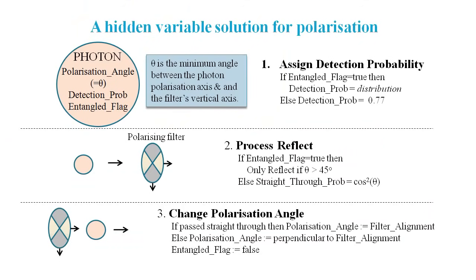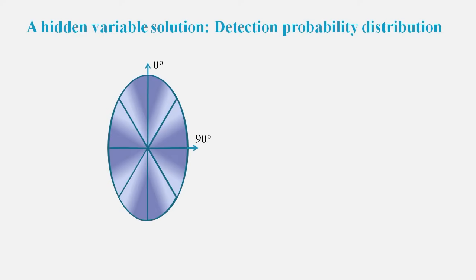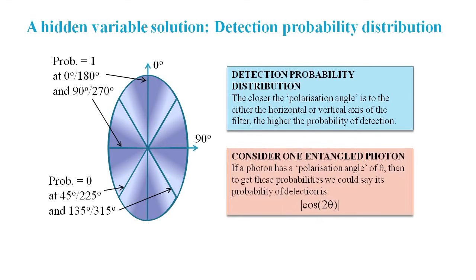Now consider the case of entangled photons. We'll use a different technique to determine the detection probability. And a really simple angle test to determine if it's reflected or not. Then, we'll assign a new polarization angle just like we did for the non-entangled case. Let's suppose that the closer the polarization angle is to either the horizontal or the vertical axis of the filter, the higher the probability of detection. So a polarization angle on a filter axis would have a high probability of being detected, possibly certainty. And a polarization angle right in between the axes would have a low probability of being detected, possibly 0. We can get this probability distribution by using the absolute value of the cosine of 2 times the polarization angle.